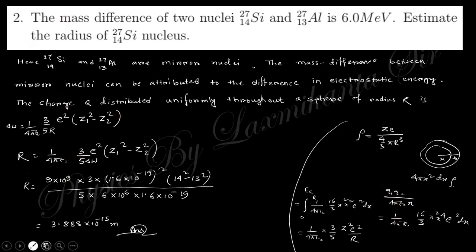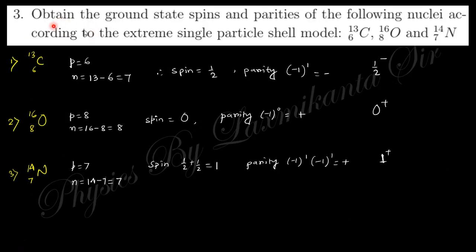For that question, this is the solution. Next question: obtain the ground state spin and parity of the following nuclei according to the extreme single particle shell model. For carbon-13, there is six protons and 13 minus 6 equals seven neutrons. For six protons the total spin is zero and parity is plus one. So for this excess neutron the spin is half and it is p₁/₂ minus. So in notation this is 1/2⁻.